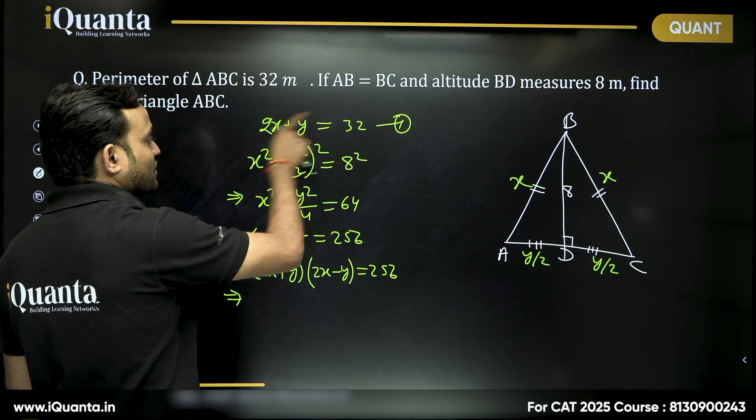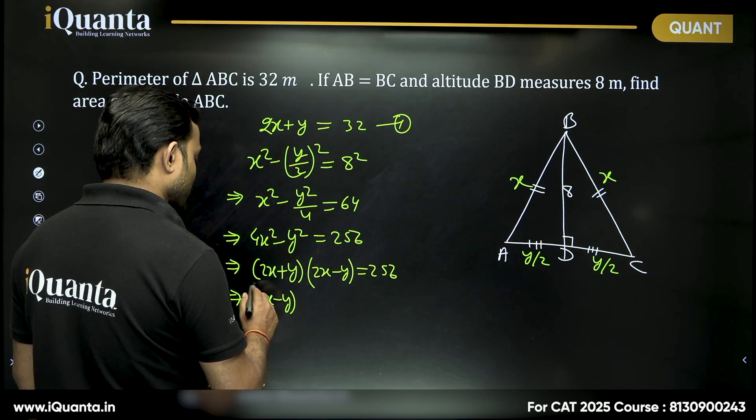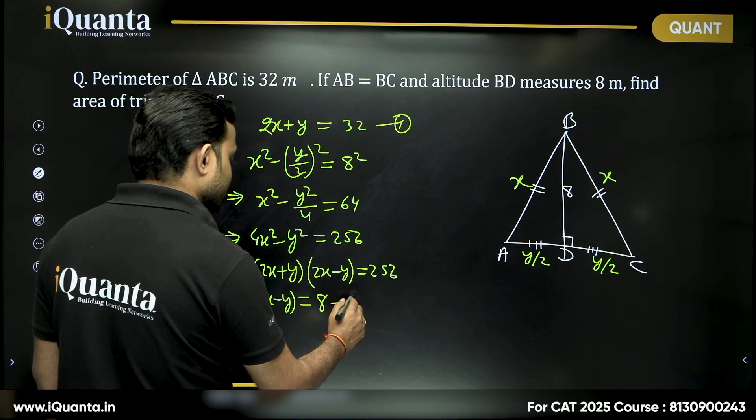Now, we already know that 2X plus Y is 32. Can I write 2X minus Y is equal to 8, 32 into 8 is 256.